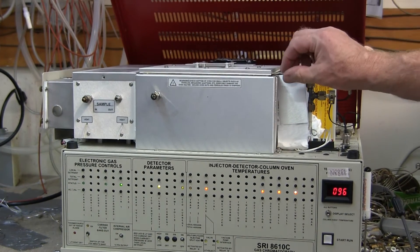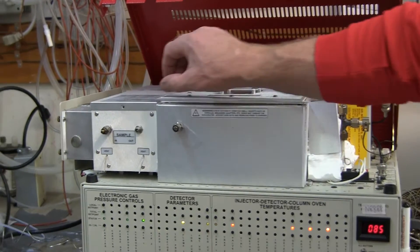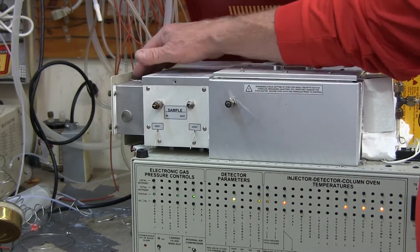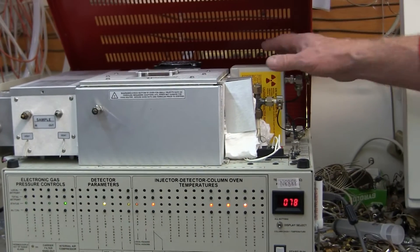The 8610C is the most common box. It has a sizable column oven, room for a valve and valve oven, a pre-concentrator if necessary, and up to six detectors mounted on the right-hand side.